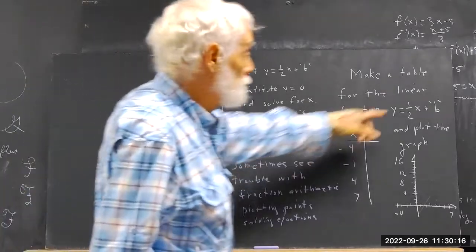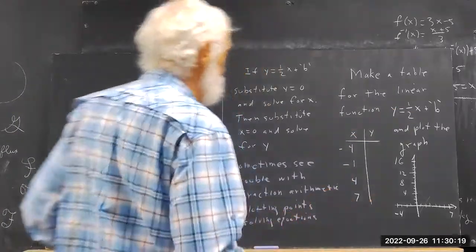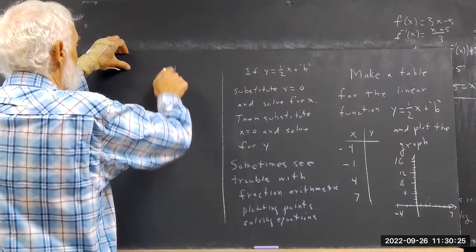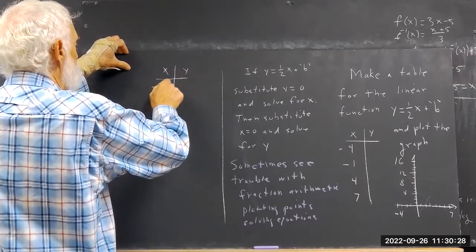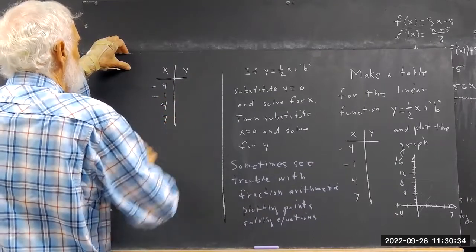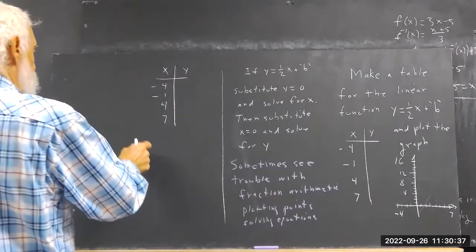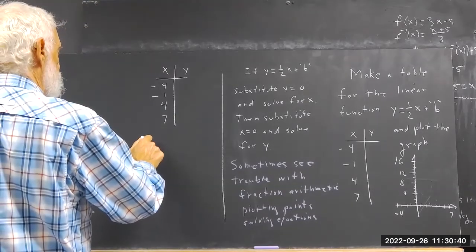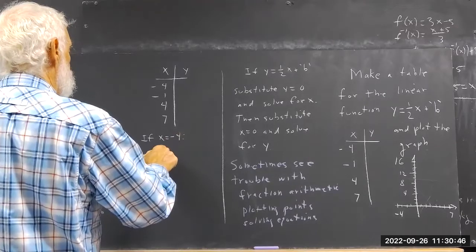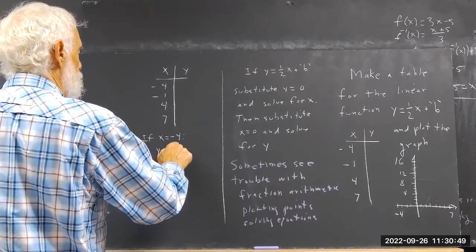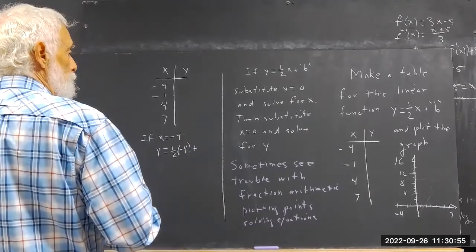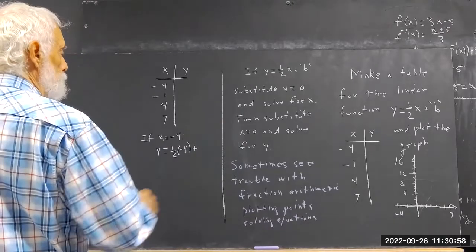First of all, I think everybody understands how to substitute x, and that's a very good start. Let's just write the table again. Now, when x equals negative 4, then y equals 1/2 times negative 4, plus your b. I'm going to use a b number of 3.